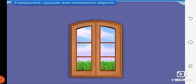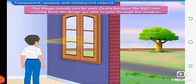Let us observe from the first window. Are we able to observe the things clearly? Yes, the things outside can be seen clearly because the light rays coming from the things are able to pass through the window.